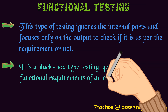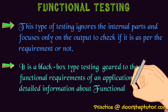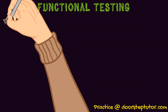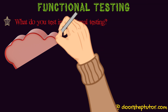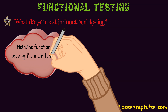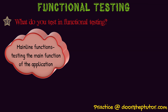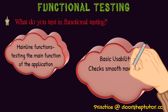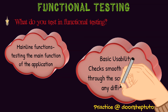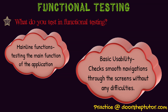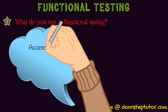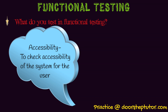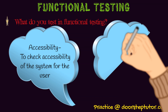We will discuss why functional testing is really important for software. In functional testing, we check: first, mainline functions — we focus only on the main functions which are mandatory for the software to perform. Next is basic usability — whether the software is able to navigate from one page to a second page. Accessibility means whether the user is capable of operating the system properly.